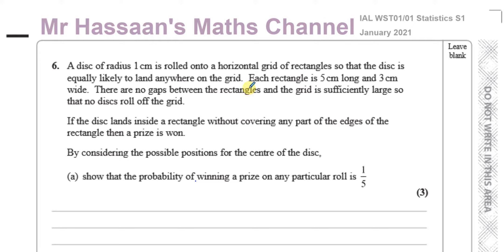This question starts off with: a disk of radius one centimeter is rolled onto a horizontal grid of rectangles so that the disk is equally likely to land anywhere on the grid. Each rectangle is five centimeters long and three centimeters wide. There are no gaps between the rectangles, and the grid is sufficiently large so that no disks roll off the grid. If the disk lands inside a rectangle without covering any part of the edges of the rectangle, then a prize is won. By considering the possible positions for the center of the disk, we've got to show that the probability of winning a prize on any particular roll is one-fifth.